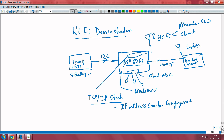The 8266 module integration into NodeMCU is so powerful that it has a complete TCP/IP stack running on that system. Essentially, when you have a TCP/IP stack, you can configure the IP address quite easily on it.